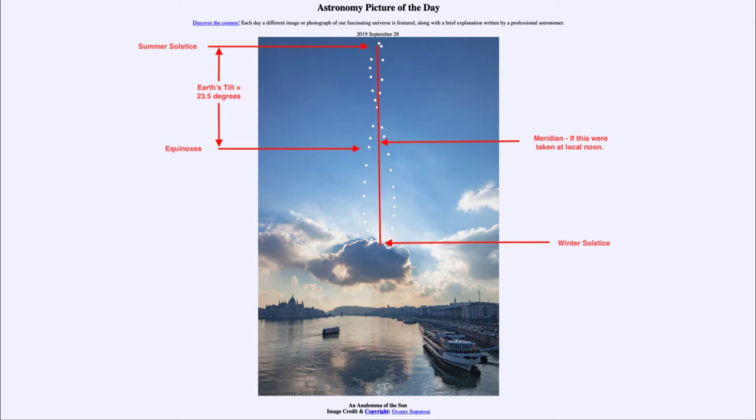So if this were taken at local noon, that line right through the middle would be what we'd call the meridian and would be what we use for measuring time. We measure time by mean solar time or the average length of a day. We don't measure time by the actual motion of the sun because it does vary.